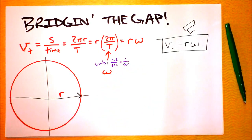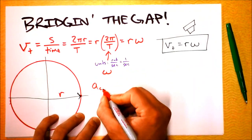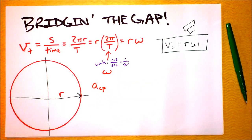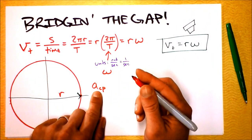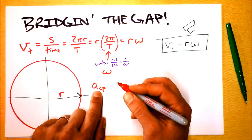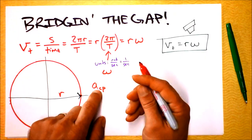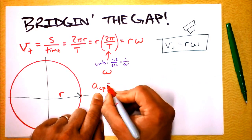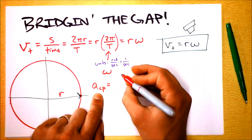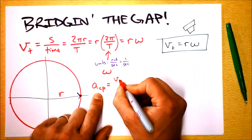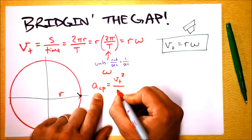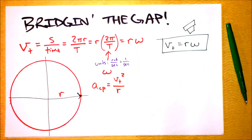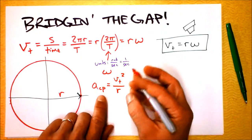Let's consider acceleration — specifically centripetal acceleration. Our book writes it as a_CP, which is linear acceleration in the centripetal direction. Something moving in a circle has centripetal acceleration, and we know it equals v_T² over r.